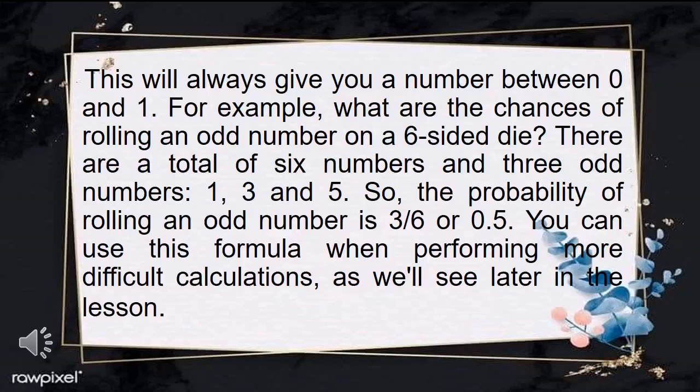For example, what are the chances of rolling an odd number on a six-sided die? There are a total of six numbers and three odd numbers: 1, 3, and 5. So the probability of rolling an odd number is 3 over 6, or 0.5. You can use this formula when performing more difficult calculations.